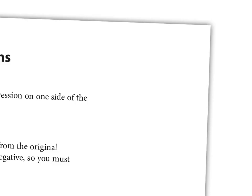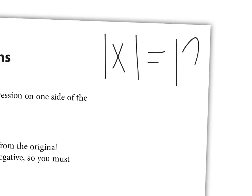I'm going to start with a basic problem — you don't have to write this down. The absolute value of x equals 12. So we're going to talk about what our solution to this would be. If the absolute value of x equals 12, what can you tell me about x?